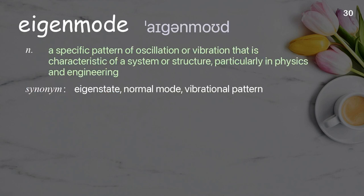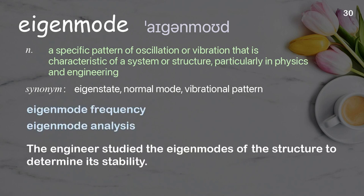Eigenmode: a specific pattern of oscillation or vibration that is characteristic of a system or structure, particularly in physics and engineering. Examples: eigenmode frequency, eigenmode analysis. The engineer studied the eigenmodes of the structure to determine its stability.